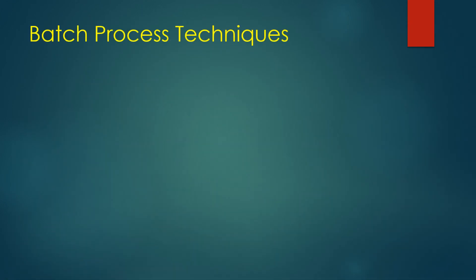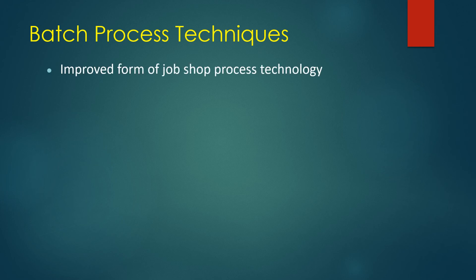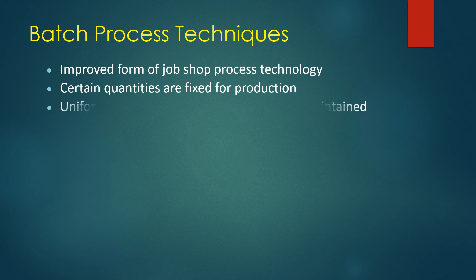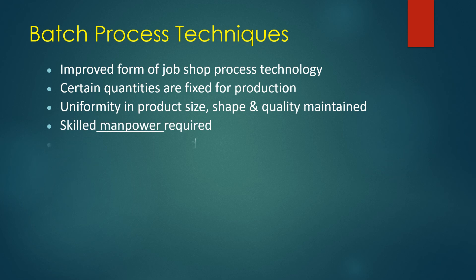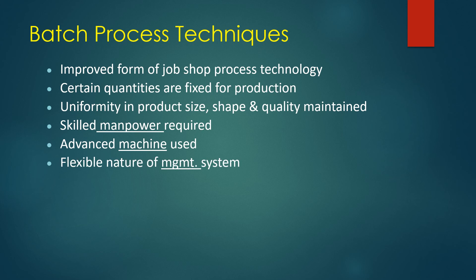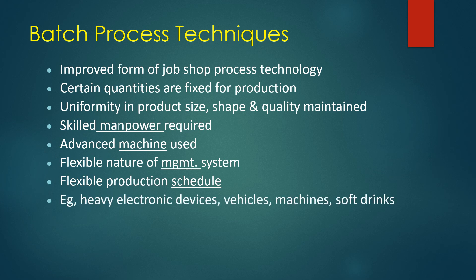The batch process technique is an improved form of job shop process technology. Certain quantities are fixed for production, and uniformity in product size, shape, and quality is maintained. Skilled manpower is required and advanced machines are used. It has a flexible nature of management system and flexible production schedule. Examples include heavy electronic devices, vehicles, machines, and soft drinks, which are produced in mass quantity.